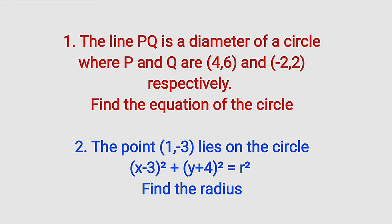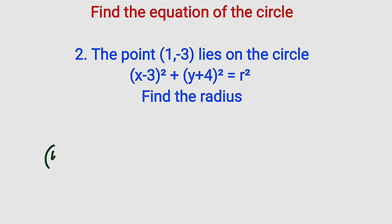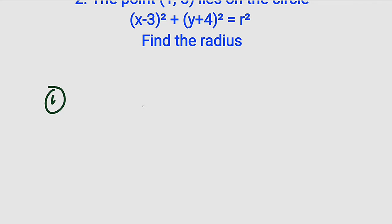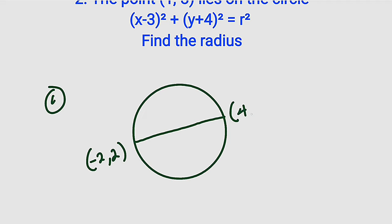Alright, let's start with the first question. Since PQ is a diameter, let us construct a circle first. Suppose we have a circle like this and it happens that this is the diameter of that circle. We have the coordinates (-2,2) and the other one which is (4,6). This is P and this is Q.